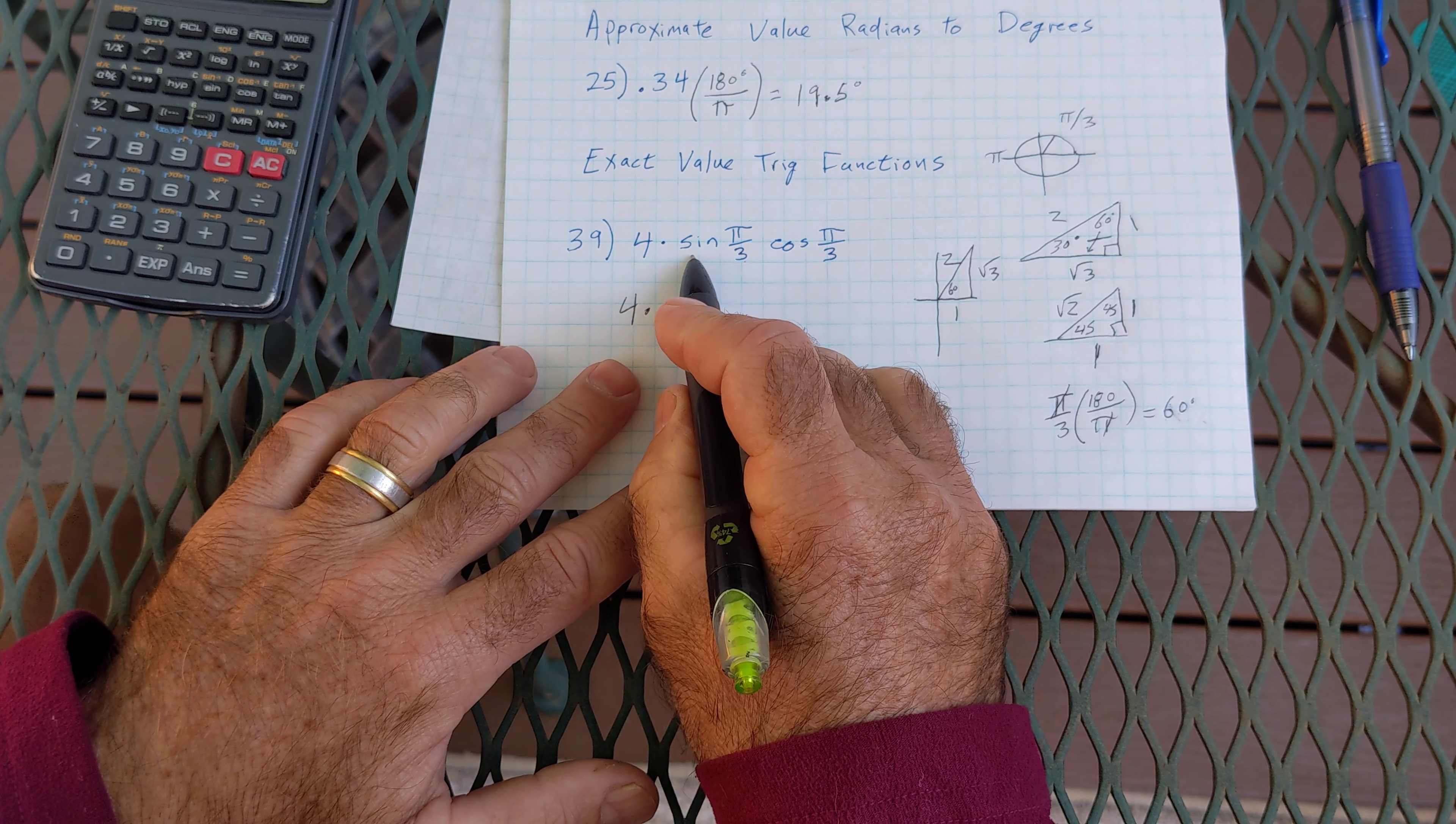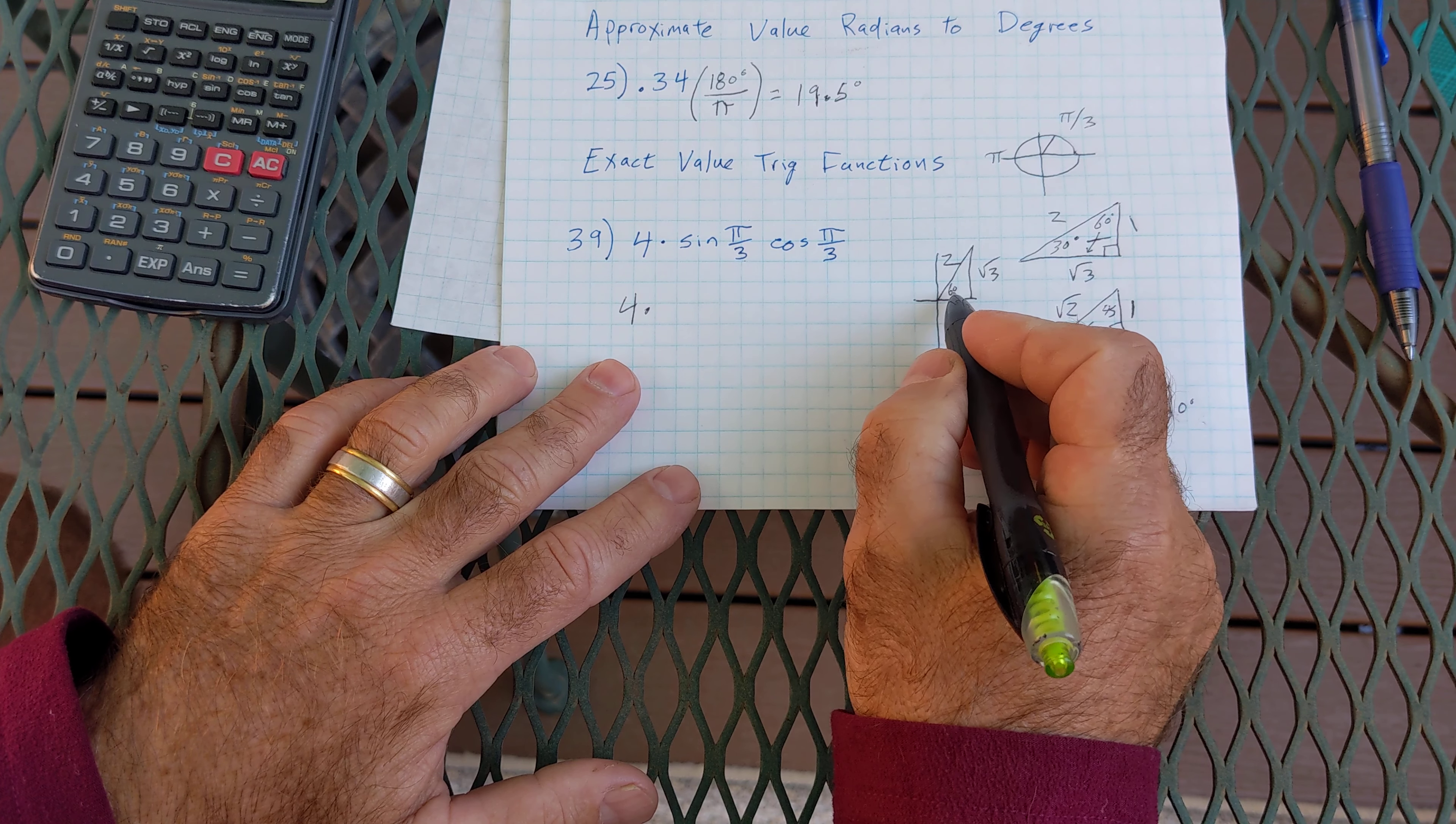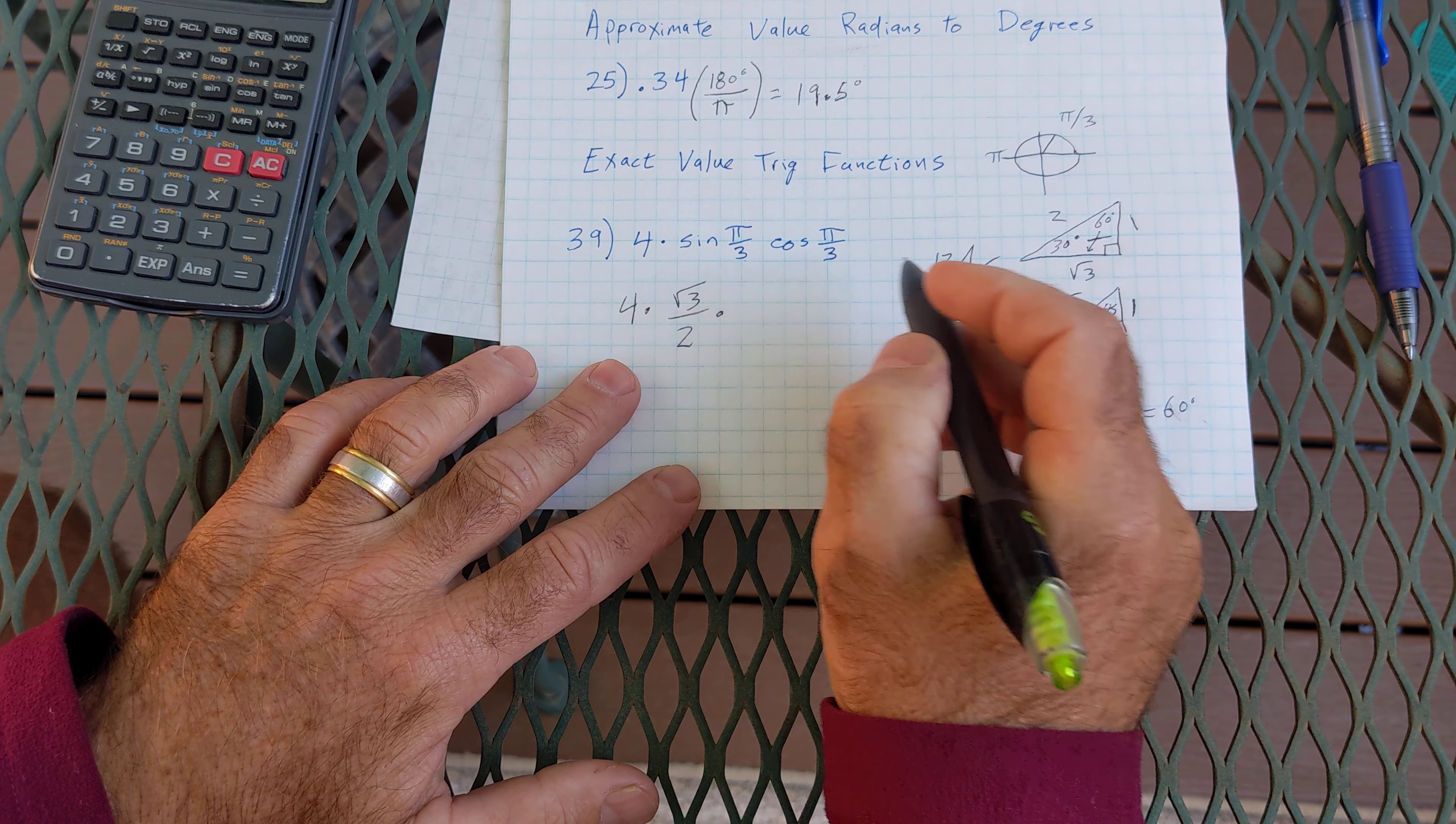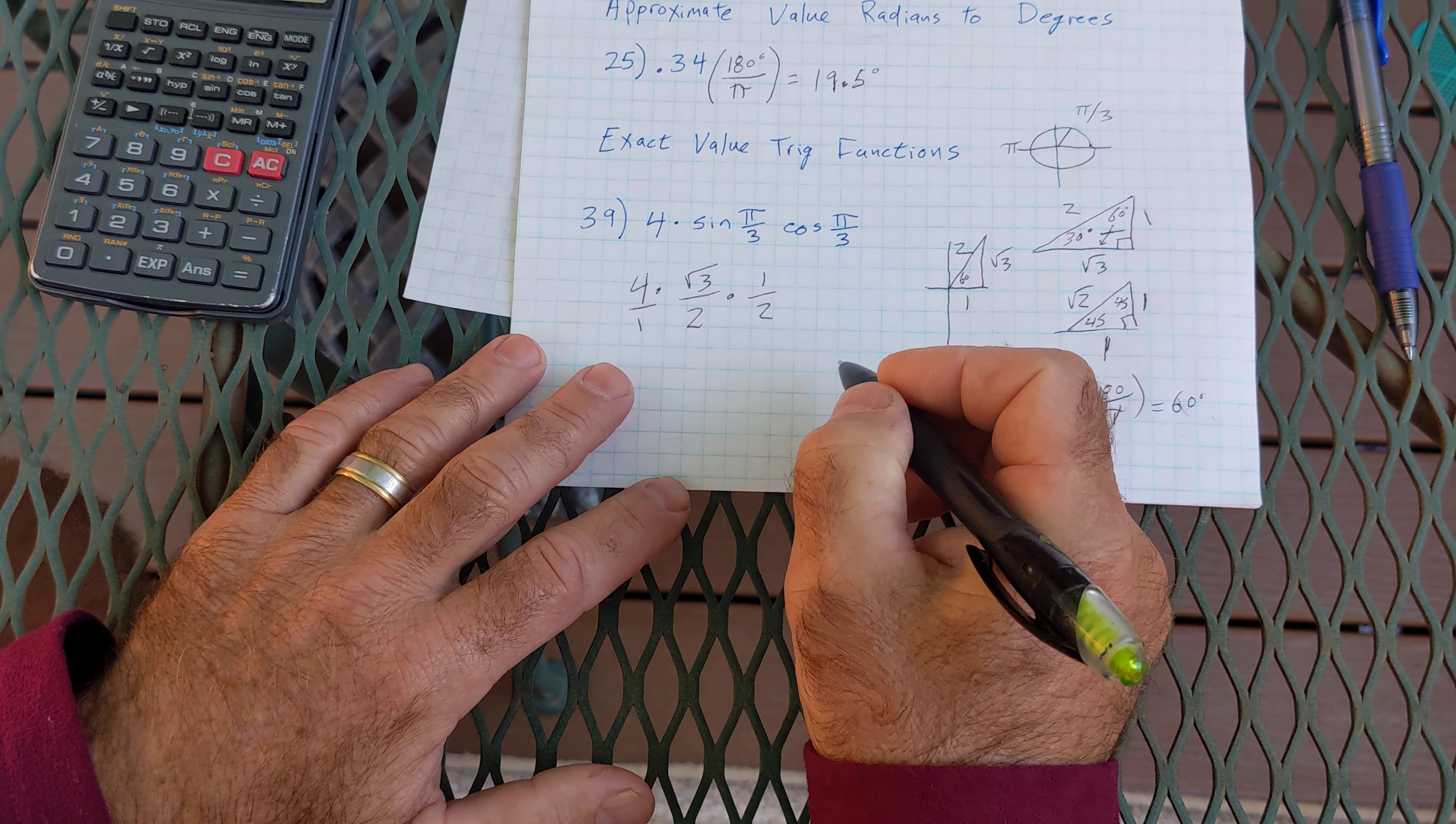Sine is a ratio of opposite over hypotenuse. So sine of pi over 3 would be the sine of 60. Opposite over hypotenuse, root 3 over 2. Cosine of pi over 3 is a cosine of 60. Cosine of 60 is adjacent over hypotenuse, 1 half. Now I have three fractions multiplied together.